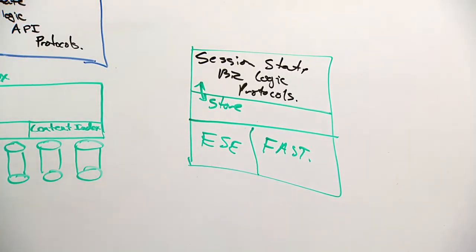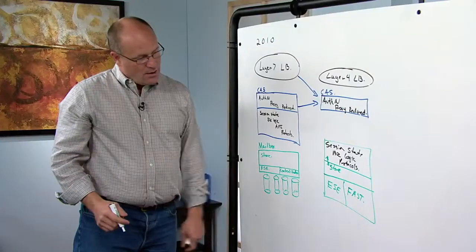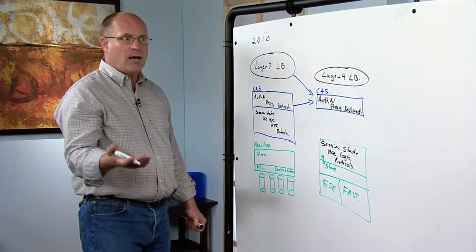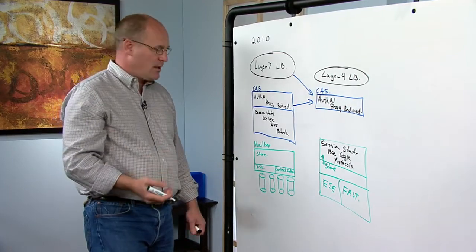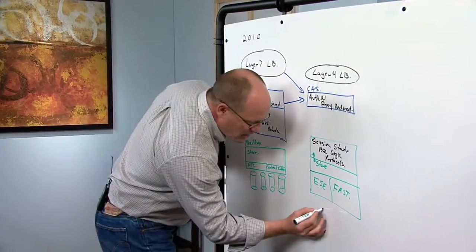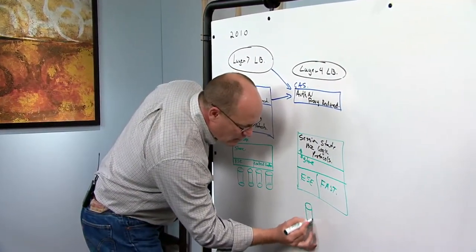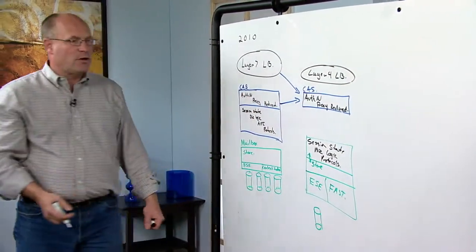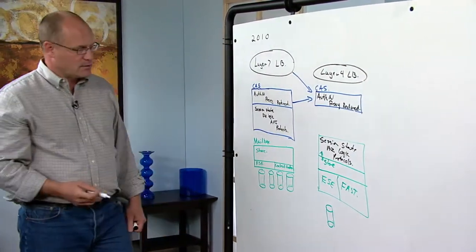In the rewrite of the store, we got several big wins. One is, we got another 4x reduction in the I/O per user operation. So I'll show that by showing a 4x reduction in the number of spindles you need to support the number of users you'd normally have on the mailbox server.